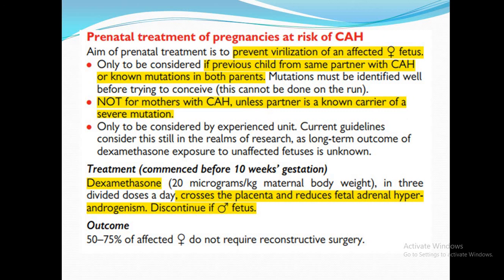Dexamethasone is given in three divided doses for prenatal treatment. It is used because it crosses the placenta and reduces fetal adrenal hyperandrogenism. Once the fetus is confirmed to be male, this treatment can be discontinued.